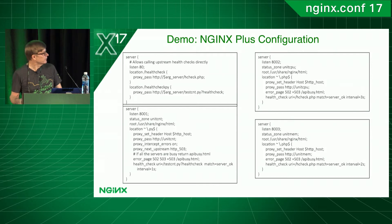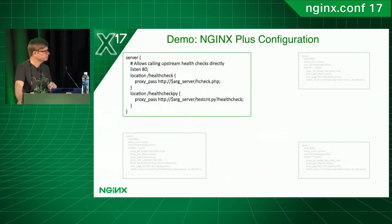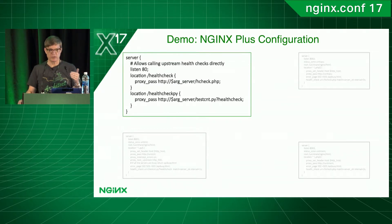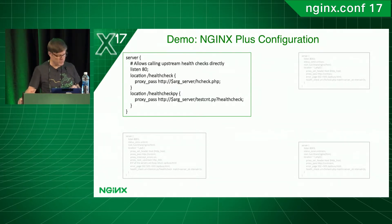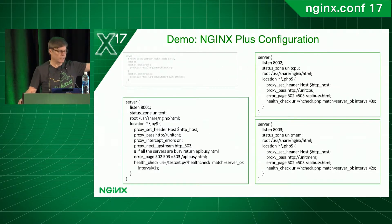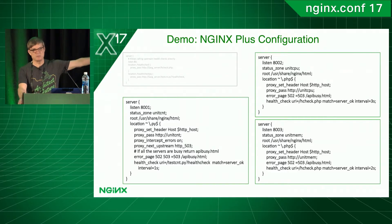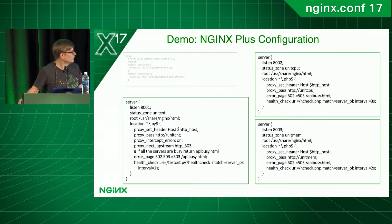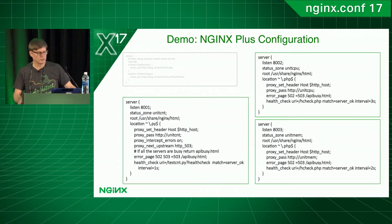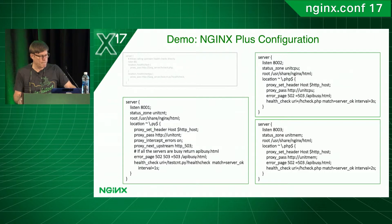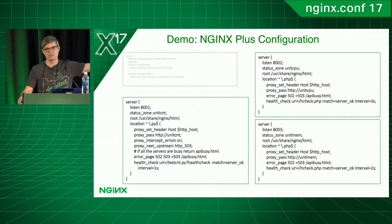For my service blocks: the upper-left one is special — I added it just for the demo so I can show an unsuccessful health check directly, since with regular server blocks NGINX stops sending requests once a server goes unhealthy. I have my Python application lower-left and PHP on the right. The PHP ones are virtually identical except for upstream group and status zone names. Health check intervals differ: one second for count, two seconds for memory, three seconds for CPU.